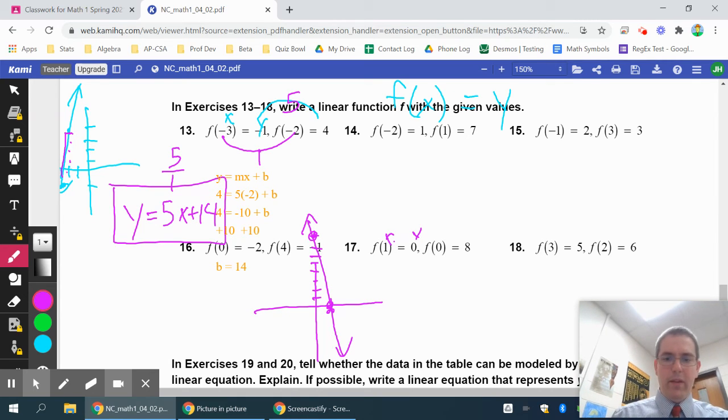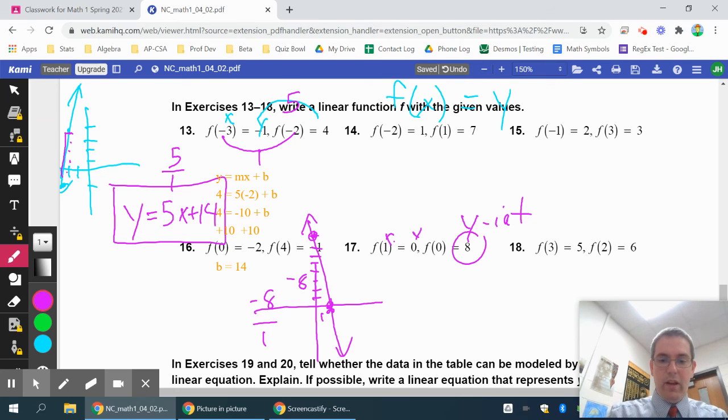They've actually made this nice for you. If you sketch the graph, you can figure out that this 8 is actually the y-intercept. So that's my y-intercept right there, it's going to be what goes on the end. And I can definitely tell my slope is negative, and I'm actually going down 8 and over 1. So my slope is negative 8 over 1, which is just negative 8. So y equals negative 8x plus 8 would be your answer.